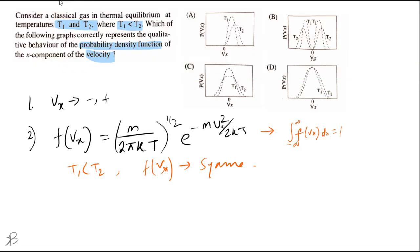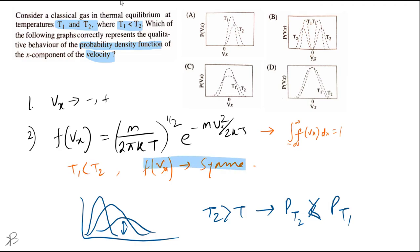For probability distribution density function, when the temperature increases the curve flattens. We know that for T1 it's like this, when the temperature is a bit higher it's like this and so on. The peak height decreases. So for T2 greater than T1, the peak of T2 will be less than peak of T1. These are the two important points: the function is symmetric and the peak of T1 is greater than peak of T2.